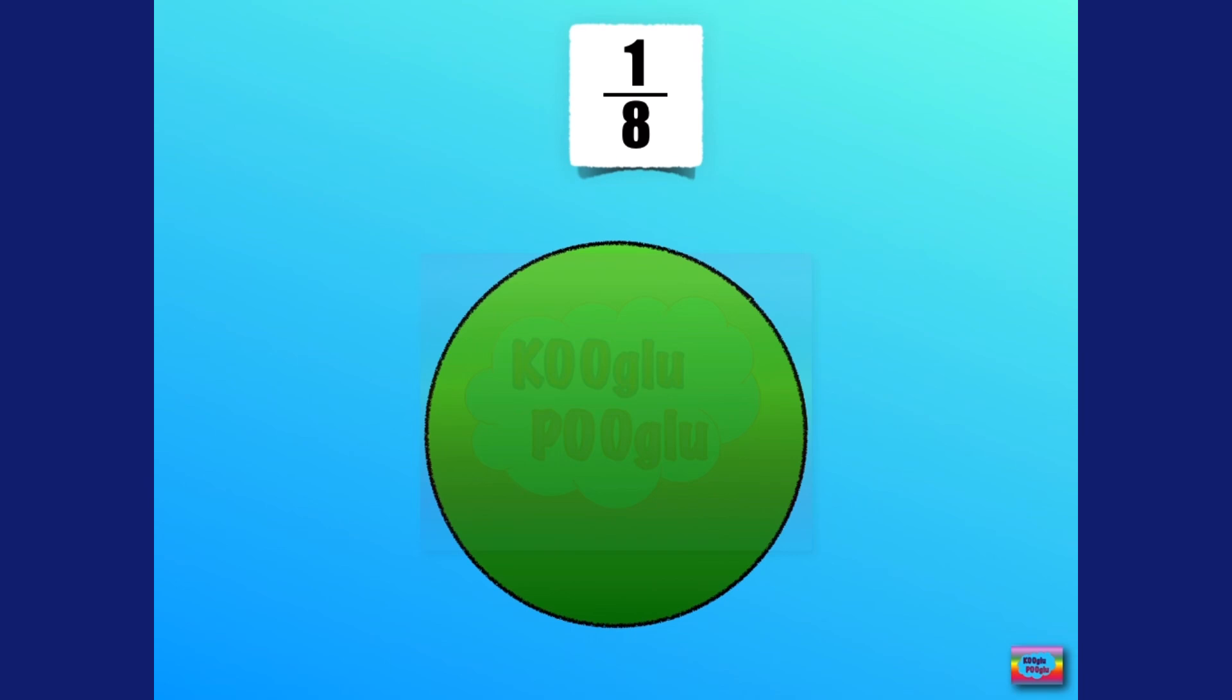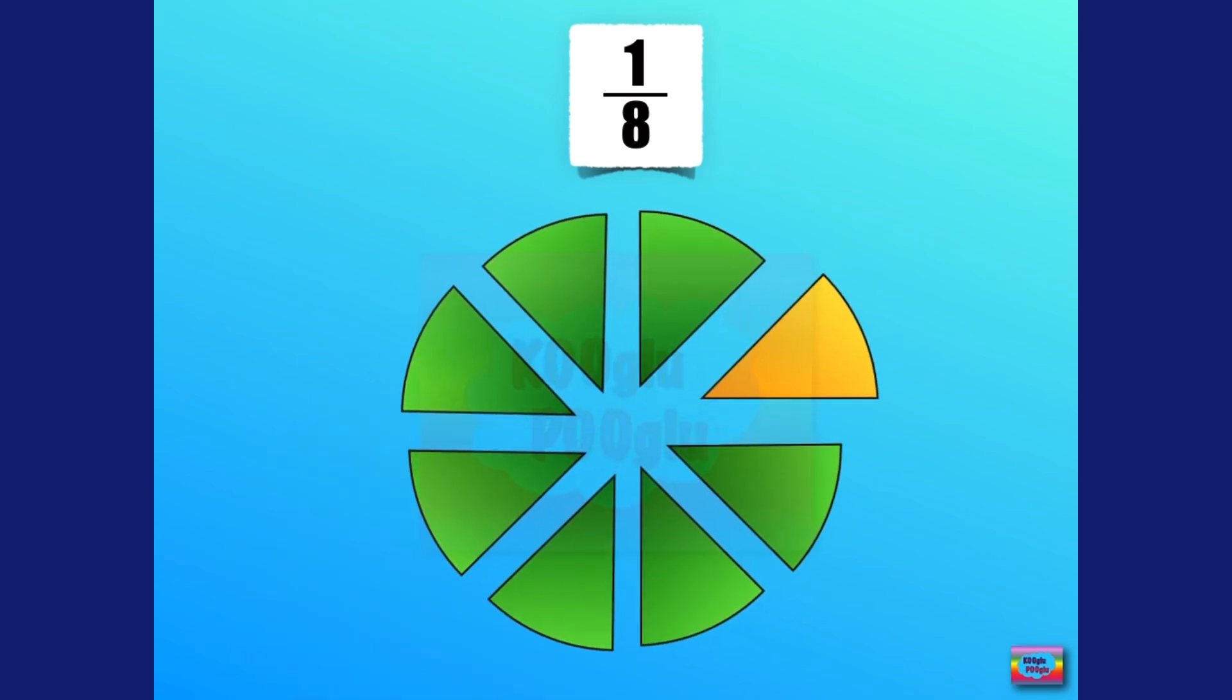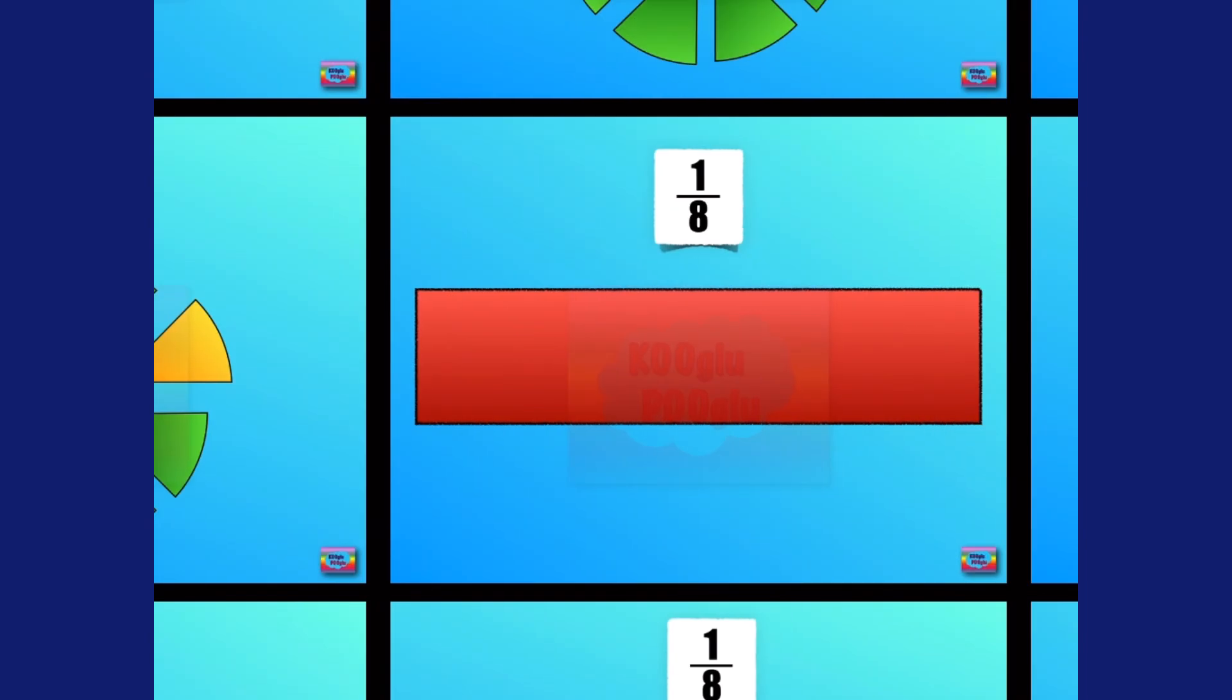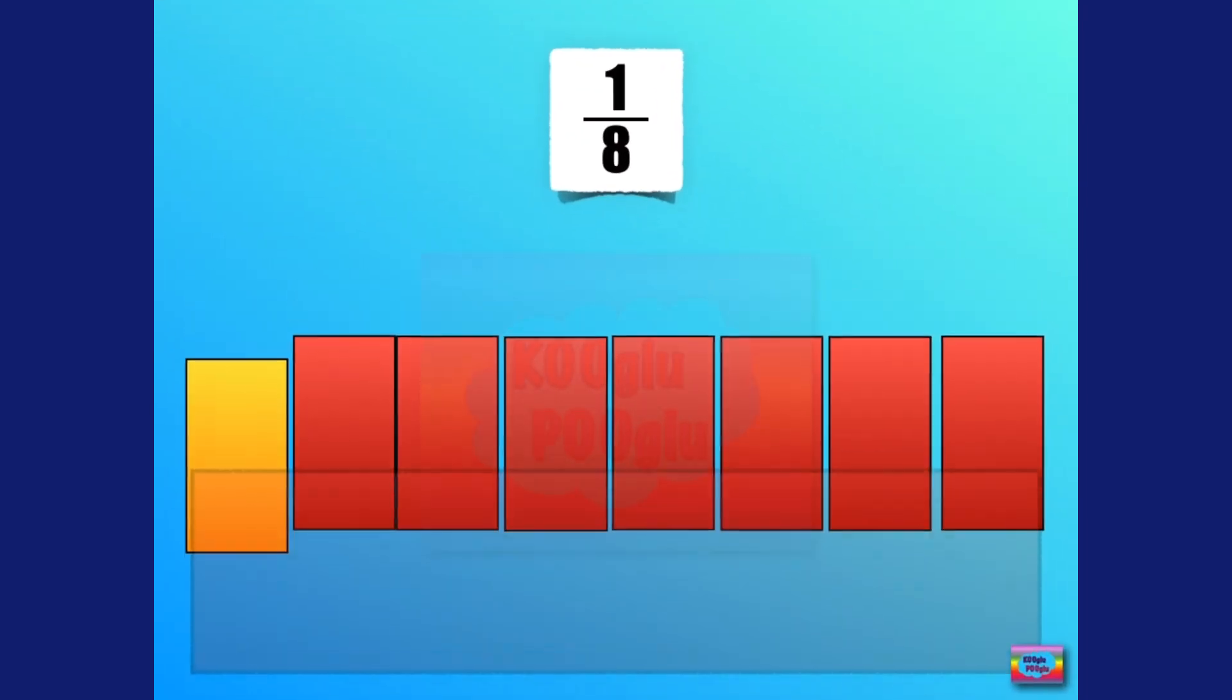Here we now have one eighth. This means that one whole has been divided into eight parts. Now this looks more like a pizza. Here we have one eighth. One part is shaded just to represent what one eighth is.